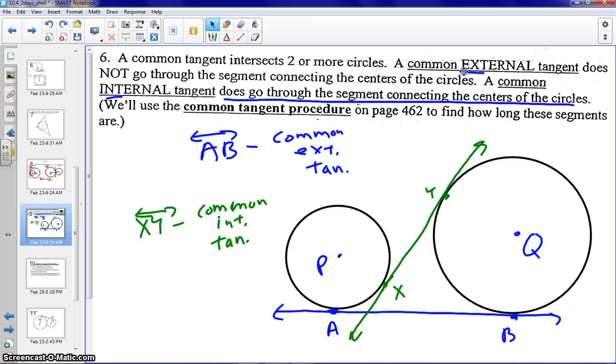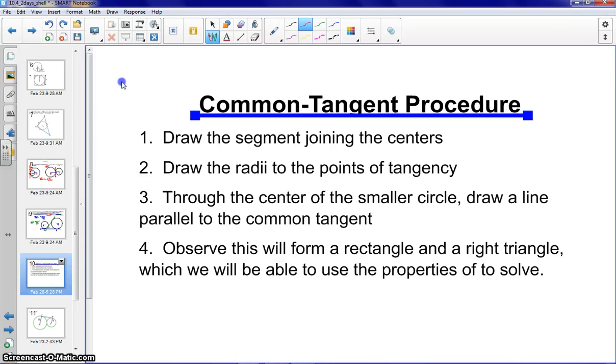Next, we're going to actually go on and look at, this is written down on page 462 in your book. There's a common procedure that we use to solve problems dealing with common internal and external tangents. I also have that written down here as well. It might be a good idea to pause and write this down or flip to your textbook to page 462. There are four main rules here.